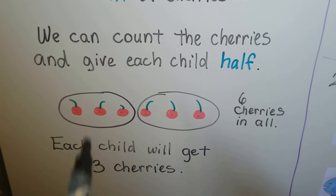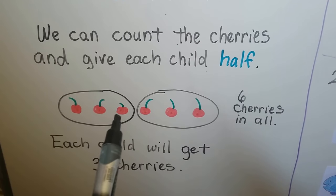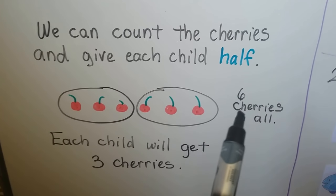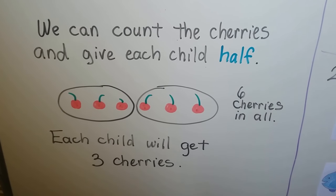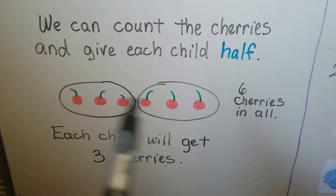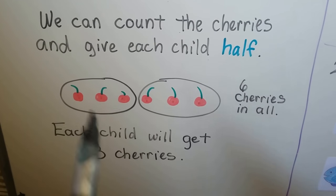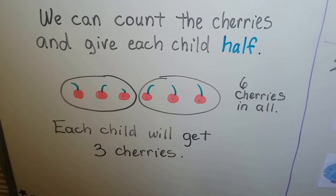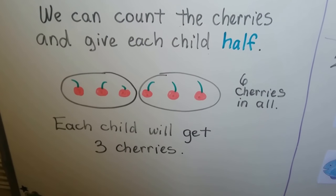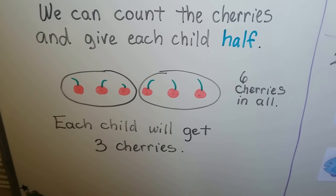We count how many there are: one, two, three, four, five, six. There are six cherries in all. And we give them each a fair share so they have the same amount — they each get three cherries.